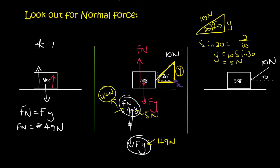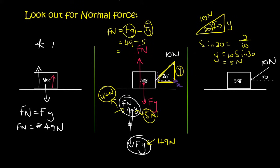Why 44? Because 44 plus 5 equals 49, and that balances gravity — so the object will not float or sink into the ground. The normal force in this situation equals gravity minus the y-component of the applied force (Fy). Normal force equals 49 minus 5, which gives 44 newtons. Another way to think about it: the goal of the normal force is simply to keep the object from falling through the ground.